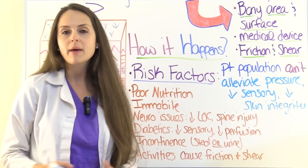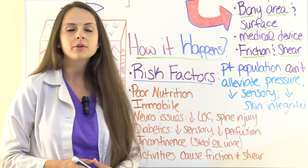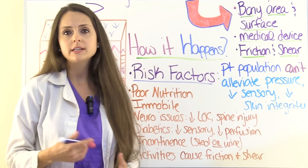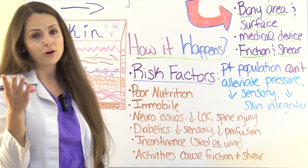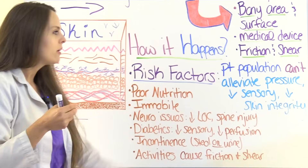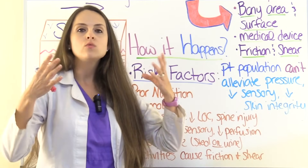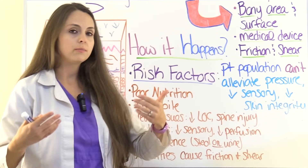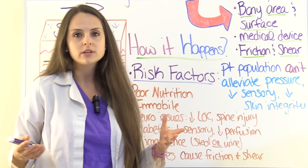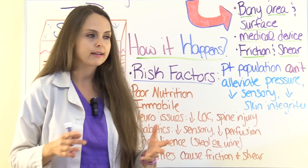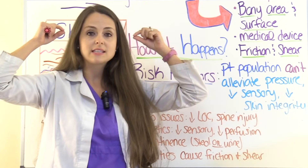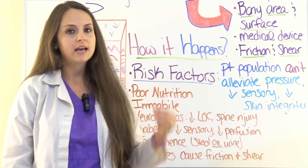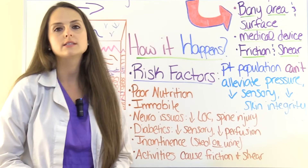Now let's talk about risk factors that increase a patient's risk of developing a pressure injury — remember these because exams love to test them. Think about the patient population that can't relieve their own pressure, meaning they can't shift their weight in bed, or they have decreased sensory perception. They may have some type of injury preventing them from doing that. They may have a medical device like a splint or nasal cannula — nasal cannulas in particular can cause pressure injuries on the ear. Or they may have decreased skin integrity.